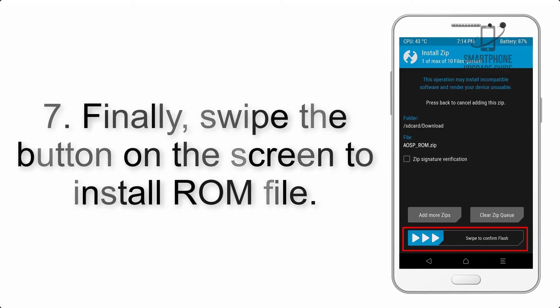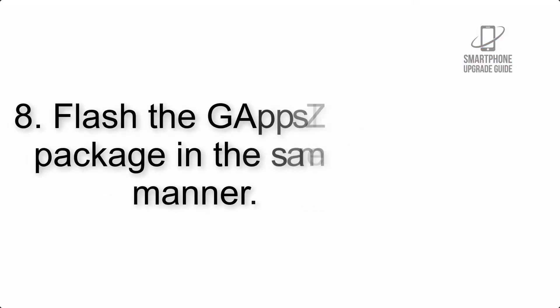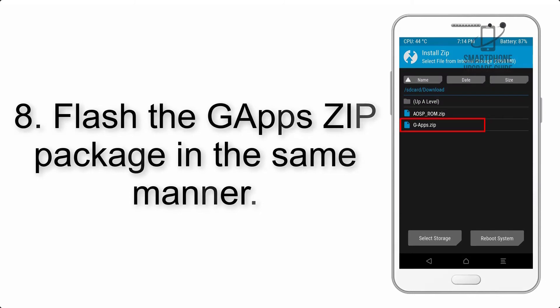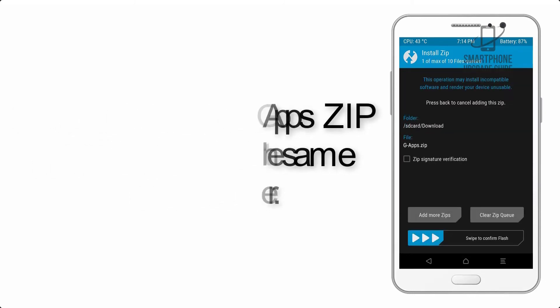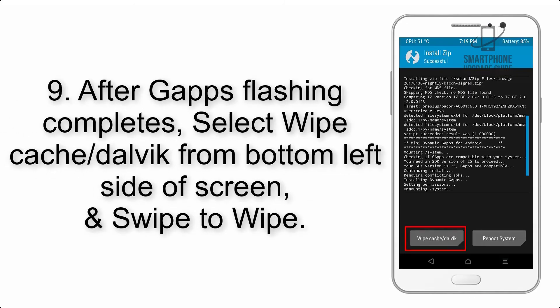Step 7: Swipe the button on the screen to install the ROM file. Step 8: Flash the GApps zip package in the same manner.